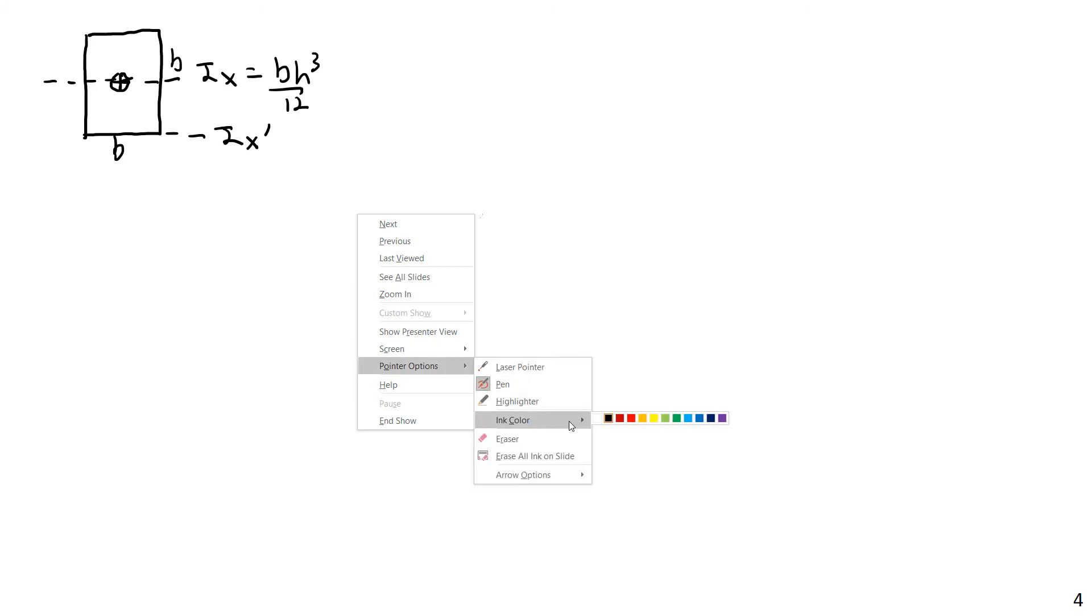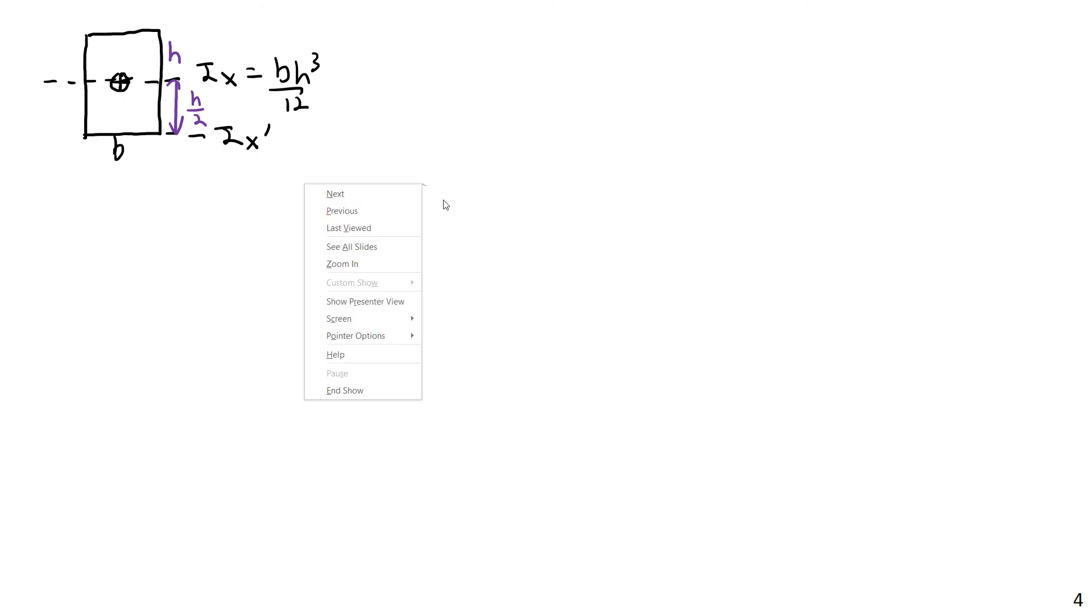Now I need to get the distance d, and that's not going to be hard. Distance d is just the distance between the two parallel axes. And because this is a distance, actually that should say h there instead of b, this distance is h over 2. So Ix prime then, again assuming I haven't been lying to you, which I suppose you never know, but you can at least go verify this in a book if you don't believe me.